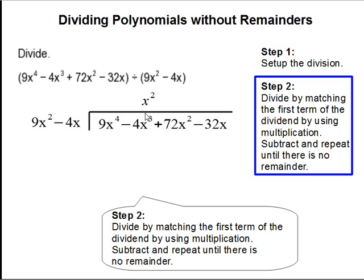And in this case, this is x². So we take x² and we multiply that to the polynomial right here. So x² times 9x² is 9x⁴.